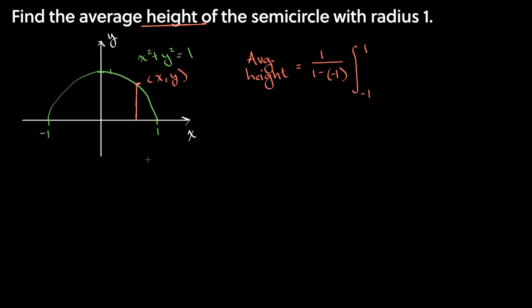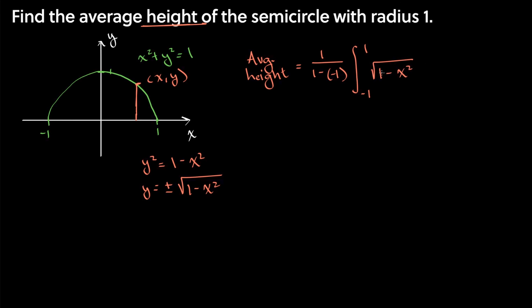We need to solve the equation of our circle for y. We have y squared is equal to 1 minus x squared. Then we square root both sides and we have y is equal to plus or minus the square root of 1 minus x squared. This semicircle, we're only interested in positive y values, so we have the square root of 1 minus x squared, and we're integrating with respect to x.